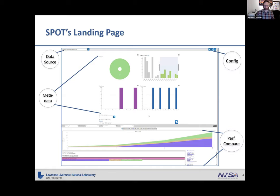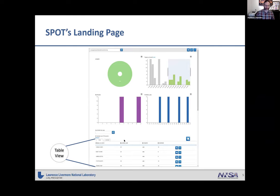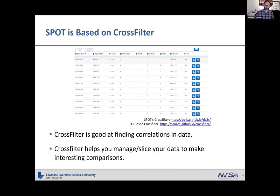When you first load Spot, you'll see something like the main screen — a few major parts. At the top is the metadata collected with ADIAC, visible as histograms for all your runs. Below that is your performance data. The whole Spot model is based on a data analytics visualization package called cross-filter, with Spot implemented using dc.js. Cross-filter is excellent at finding correlations in large datasets.